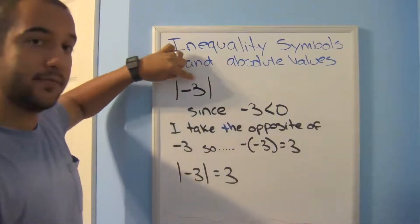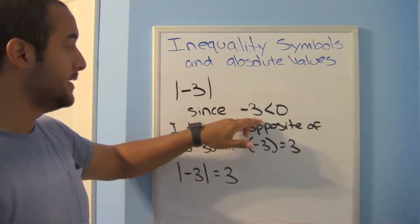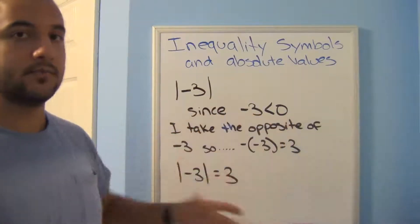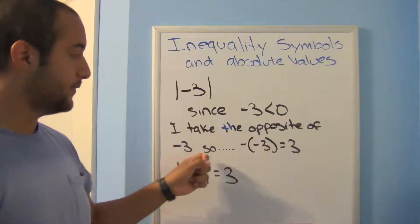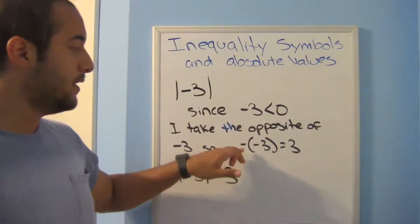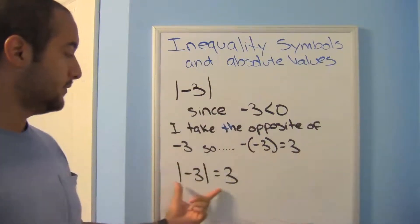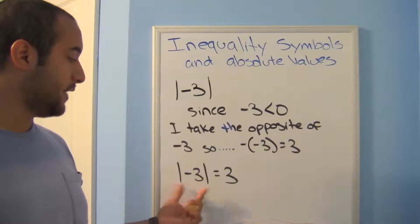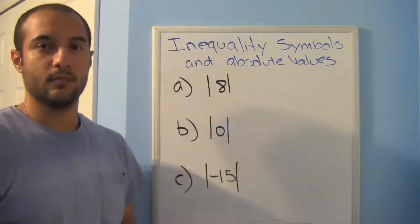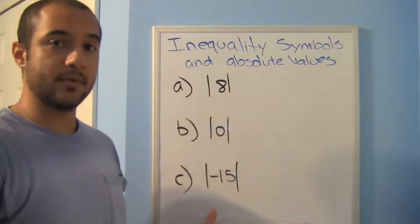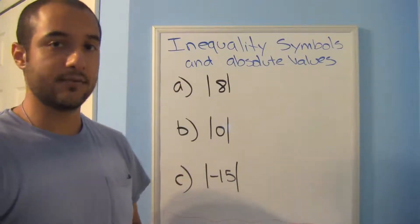Let's work through the absolute value of negative three. Since negative three is less than zero, I take the opposite: negative times negative three equals three. So the absolute value of negative three equals three. I've put three questions on the board — go ahead and try them out and find the absolute values, and I'll have the answers in just a second.